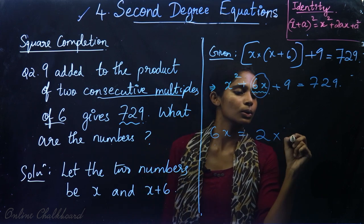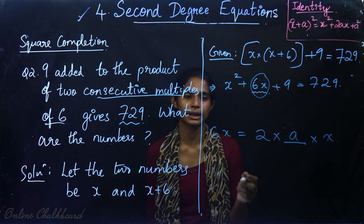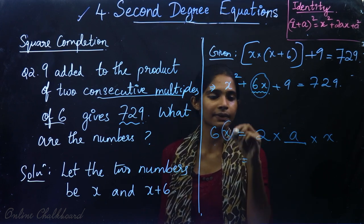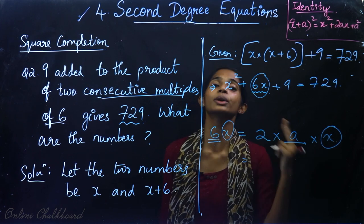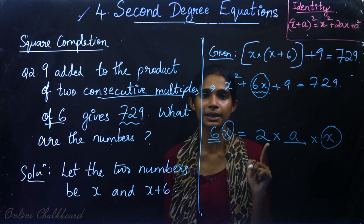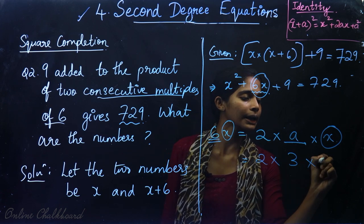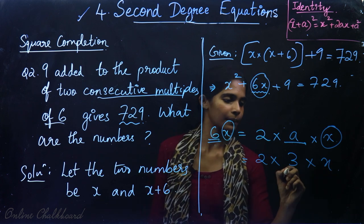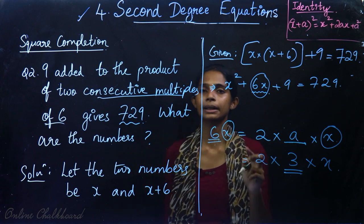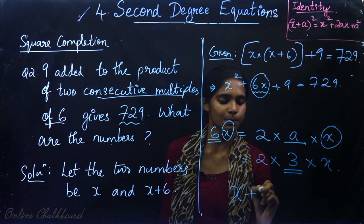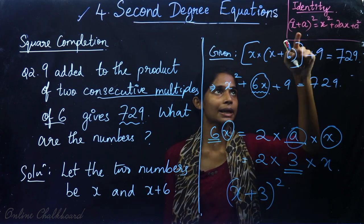Now we apply the completing the square method. We notice that 6x can be written as 2 into 3 into x, so our 'a' value is 3. This means the left side matches the form x² + 2·3·x + 3², which is (x + 3) the whole square.